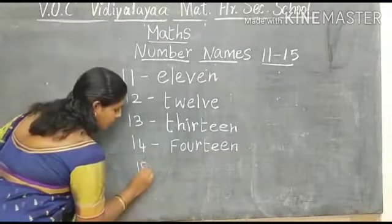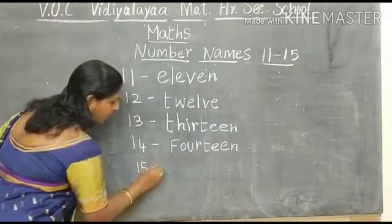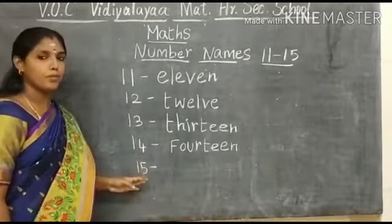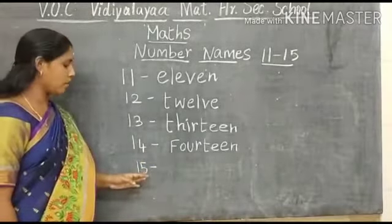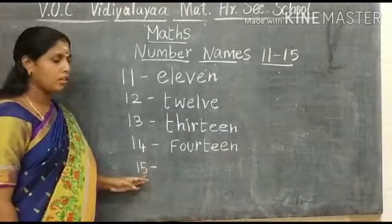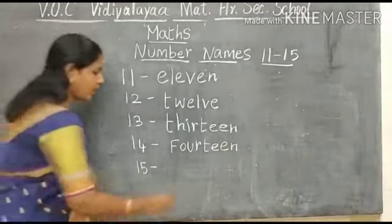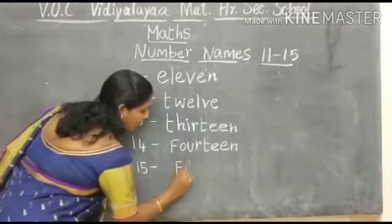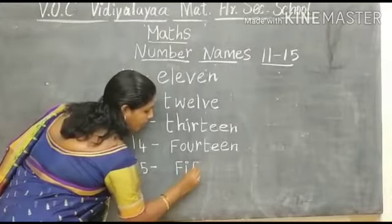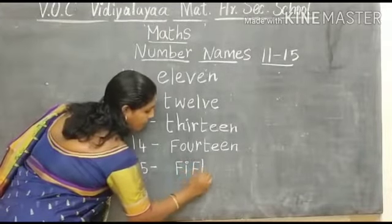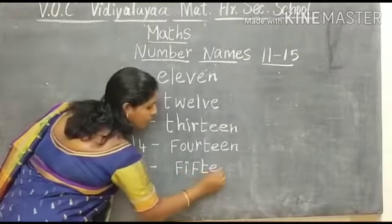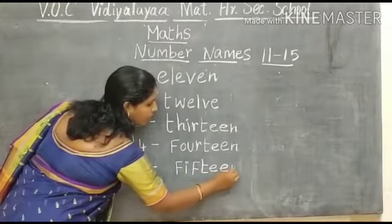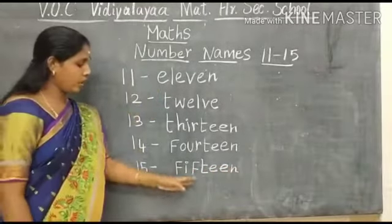Next number is 15. What number is this? This is number 15. What is the spelling of number 15? F, I, F, T, E, E, N. 15.